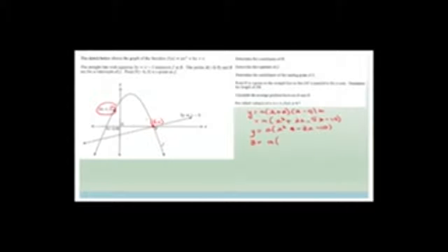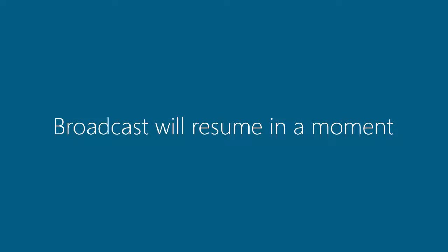We can now use this point here and substitute it in to find the value of a. We know that 3 equals a times x is minus 1, all squared, minus 3 times by minus 1, minus 10. That becomes 3 equals a times 1 plus 3 minus 10. So 1 plus 3 is 4, minus 10 is minus 6. Therefore a is equal to minus 1 half.